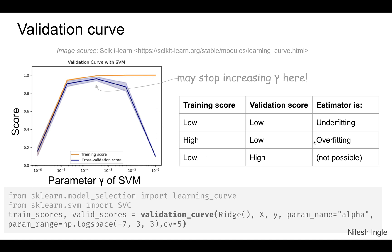You won't see a case where the training score is low and the validation score is high — that's not possible according to the docs. The implementation to get values for plotting a validation curve uses the method validation_curve — there is a typo in the slides, it should be validation_curve.